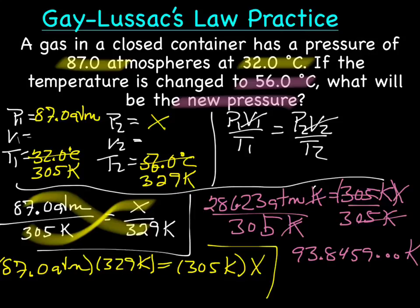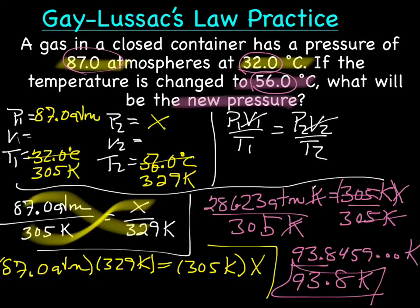Giving us, I got 93.8459 and so forth K. Let's go back and look at our sig figs. We have 3 and 3 and 3. So our final answer is going to be 93.8K. Let's do a quick check. Our temperature increased from 1 to 2, which means our pressure should also increase. And we went from 87 to 93, so we must have done it right.